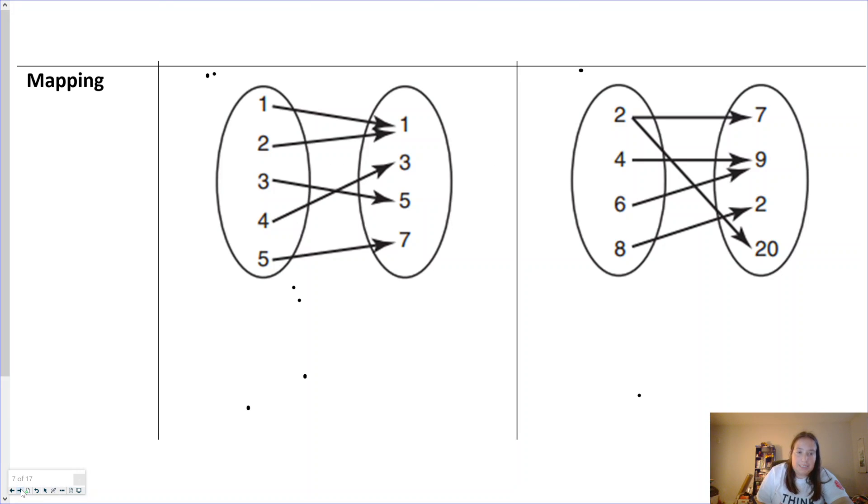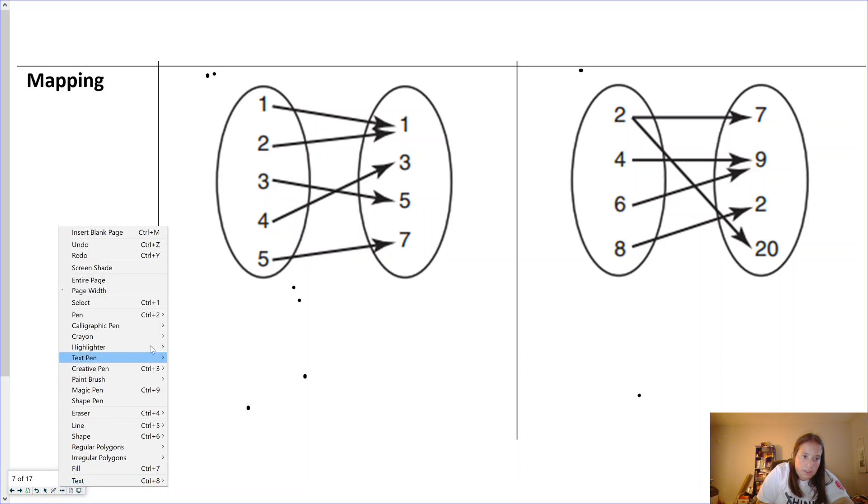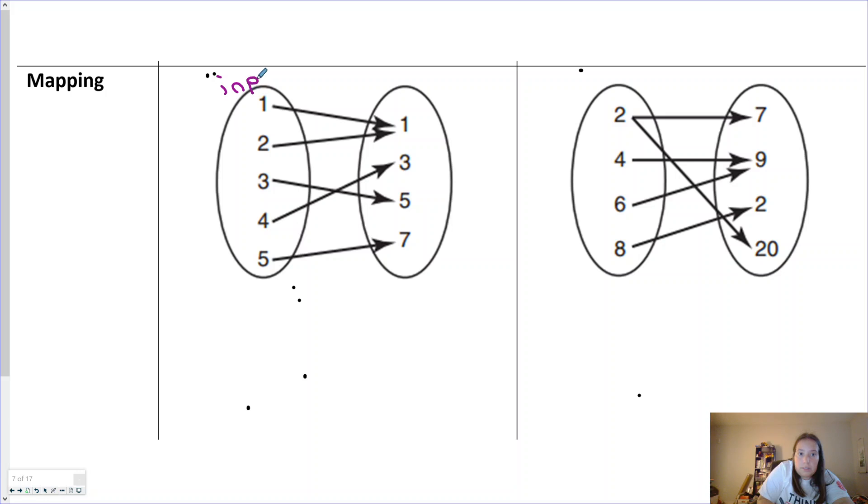So let's look at these two representations on what we call a mapping. So this first part is the inputs, and the second oval shows the outputs, or the x and y values.